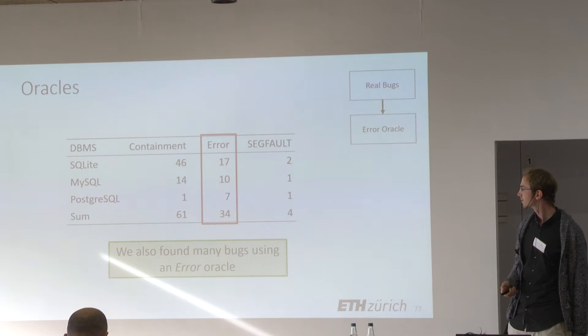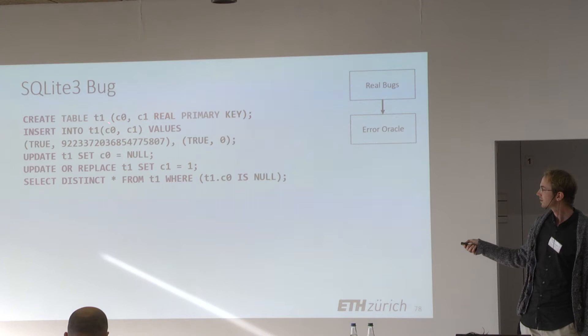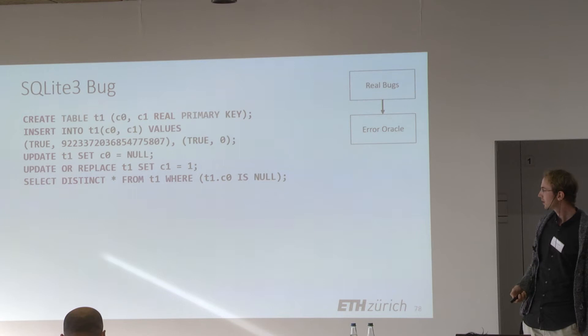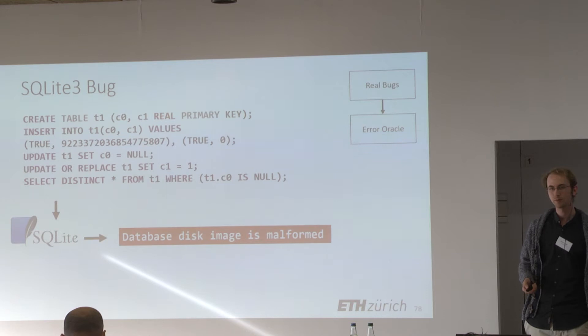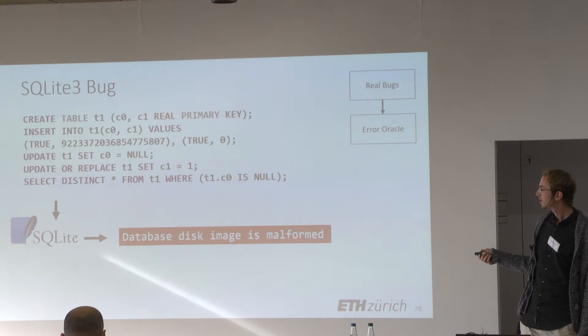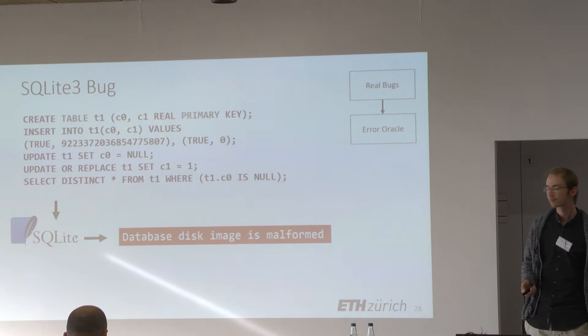Besides the containment oracle, we also found some bugs with an additional oracle called the error oracle. Here is an example: we create a table, insert values, update some values, and when we fetch records, SQLite returns an error message — 'database disk image is malformed' — meaning the database was corrupted due to an implementation bug. The error oracle checks for unexpected error messages like this one. The insert and update statements corrupted the database. This bug was quickly fixed by the SQLite developers.